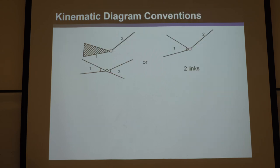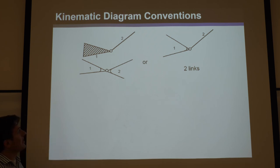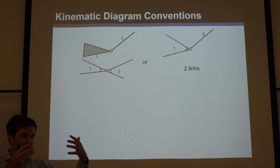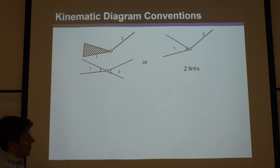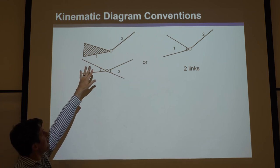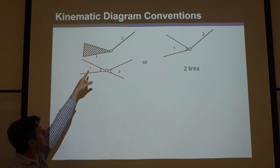A couple of conventions: often in stick diagrams, entire links are represented as a single line — a very simple way to draw a link. But sometimes that doesn't work because links might have multiple joints and require some two-dimensionality. When that's the case, you can see there's like a wedge attached to another link, labeled by a revolute joint.